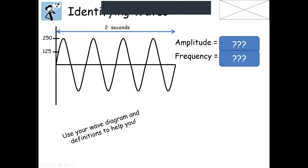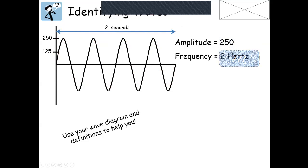Have a go at this one now. We've got a different scale on the y-axis and a different time passed — what would the amplitude and frequency be? Pause the video now. We have one, two, three, four waves again, but this time in two seconds. And this time our scale goes up to 250. So the amplitude is 250 and the frequency is four waves in two seconds — that's two hertz.